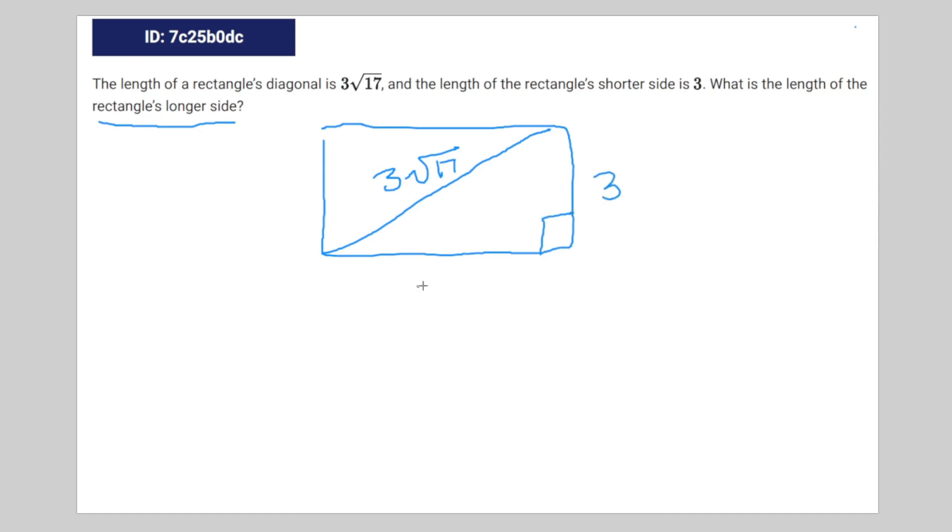So we're going to use Pythagorean theorem to find that side, the longer one. So 3 to the power of 2 plus b squared is equal to 3 times the square root of 17 to the power of 2, which is 9 plus b squared is equal to 9 times 17.